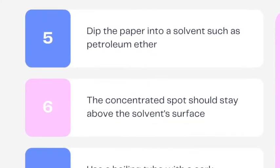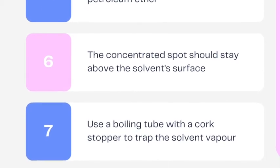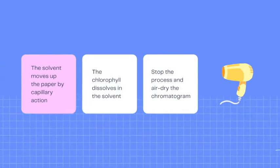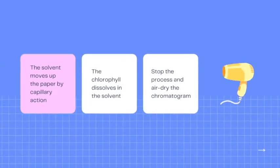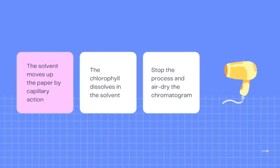Sixth, the concentrated spot of chlorophyll should stay above the surface of the solvent. Seventh, a boiling tube with a cork stopper is used as a chromatography chamber to trap the solvent vapor. Eighth, the solvent moves up the chromatography paper by capillary action and passes through the chlorophyll spot.